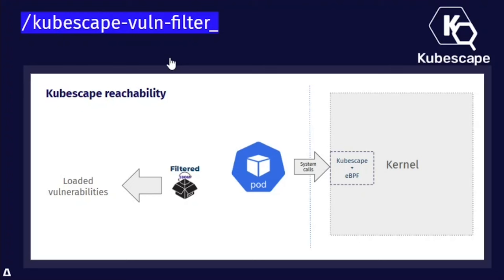Cubescape took vulnerability scanning to the next level by enriching the original scan with runtime data. The way Cubescape works is by installing a node agent that uses Inspector Gadget to hook into different eBPF events. It uses file activity information to understand which files are opened in each of the workloads running in our Kubernetes cluster. This information enables it to cross-reference the SBOM with this data and find which software packages were touched during runtime and if they are loaded into memory or not.